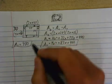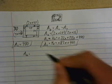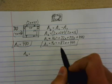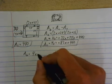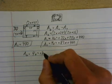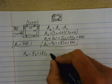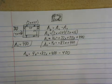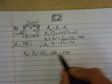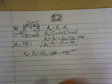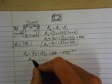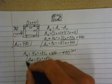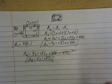Now I can finally get the area of the border, which is going to be the large minus the small. So: (4x squared + 82x + 400) minus 400. The 400 minus 400 cancels out to 0. So the area of the border is equal to 4x squared plus 82x.